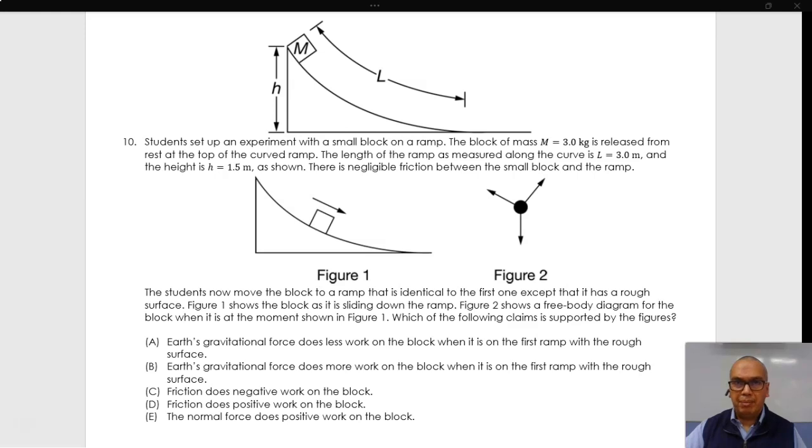The length of the ramp, as measured along the curve, is l equals 3 meters, and the height is h equals 1.5 meters, as shown.